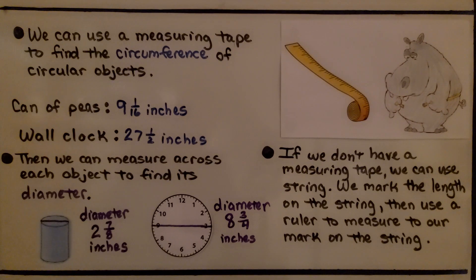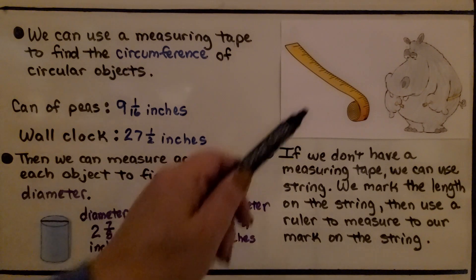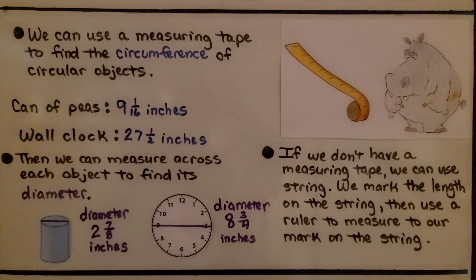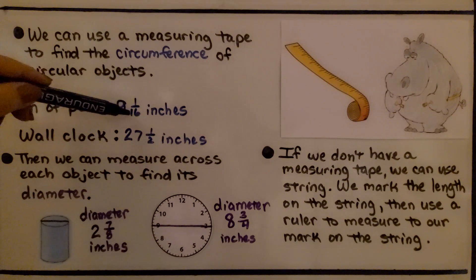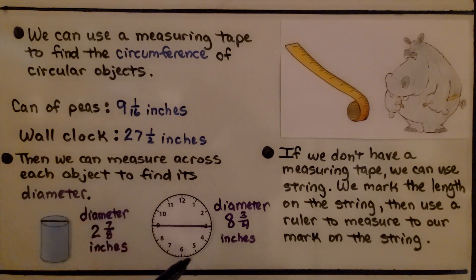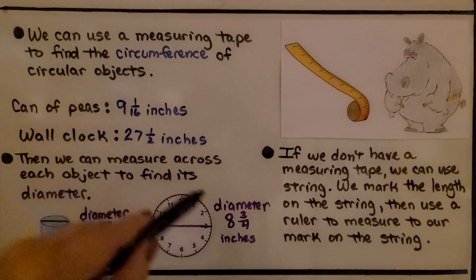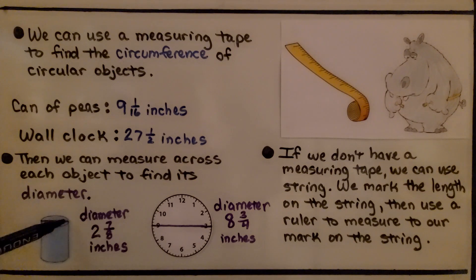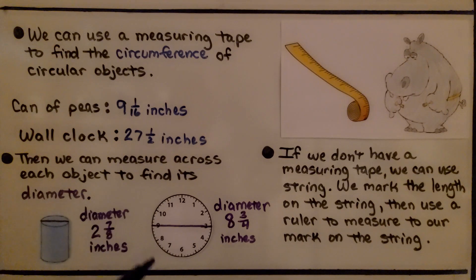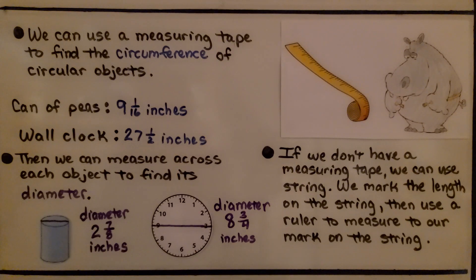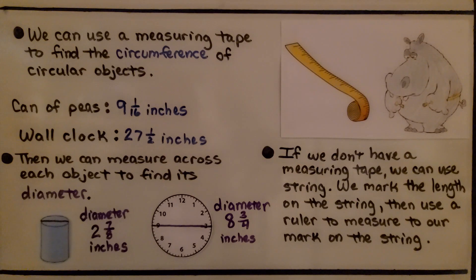We can use a measuring tape to find the circumference of circular objects, because they're pliable — they bend so easily. I measured a can of peas and got nine and one-sixteenth inches for the circumference. I also measured around a wall clock and it was twenty-seven and a half inches. Then we can measure across each object to find its diameter: the can of peas had a diameter of two and seven-eighths inches, and the wall clock was eight and three-fourths inches. If we don't have a measuring tape, we can use string — mark the length on the string for the circumference, then use our ruler to measure to our mark on the string.